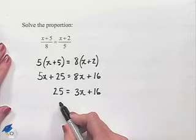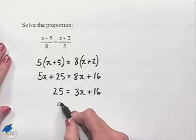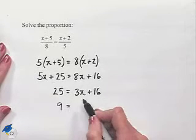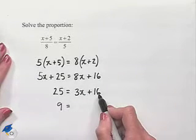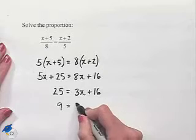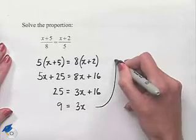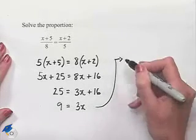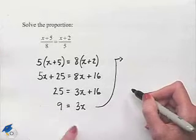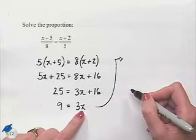25 minus 16 is 9. 3x plus 16 minus 16 gives us 3x. Now to solve for x, we can use the fact that we're multiplying by 3, so we'll use the inverse operation of division.